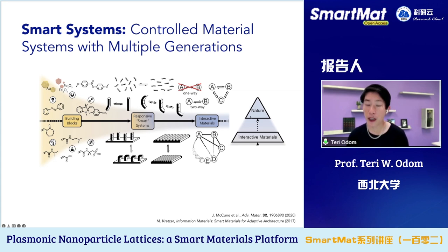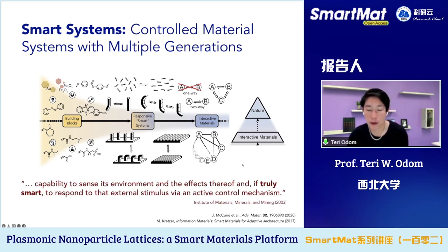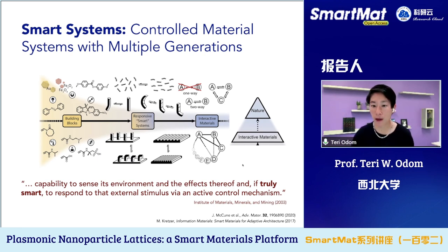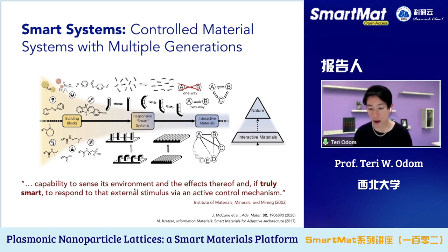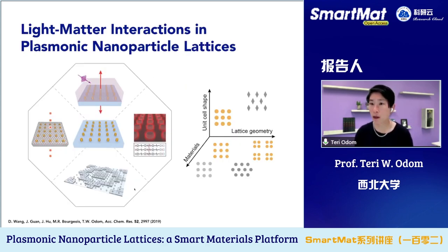This is where we start to think about interacting materials. Ultimately, nature is one of the smartest systems we're aware of that can auto-regulate and self-regulate intrinsically. A smart system has many definitions. The one from 2003 from the Institute of Materials, Minerals, and Mining states: a smart system has the capability to sense its environment and, if truly smart, to respond to that external stimulus via an active control mechanism. Today I want to introduce some building blocks and an example of how we can design a system that responds to an external stimulus with an active control based on negative feedback.